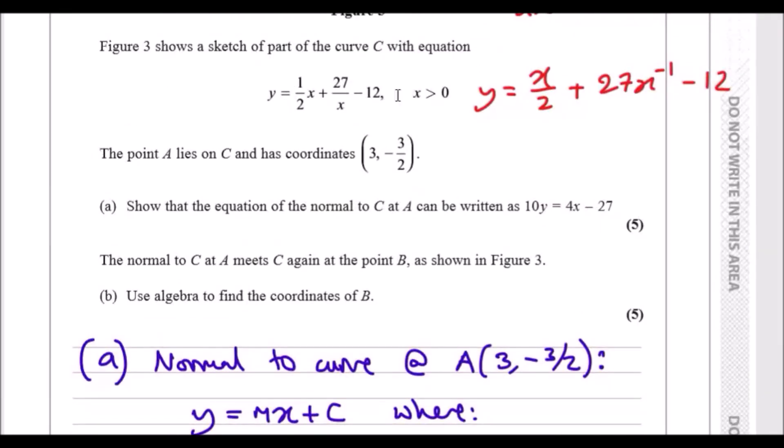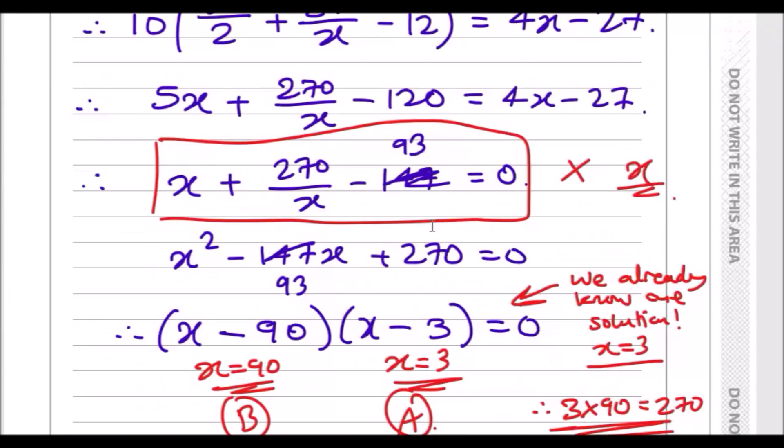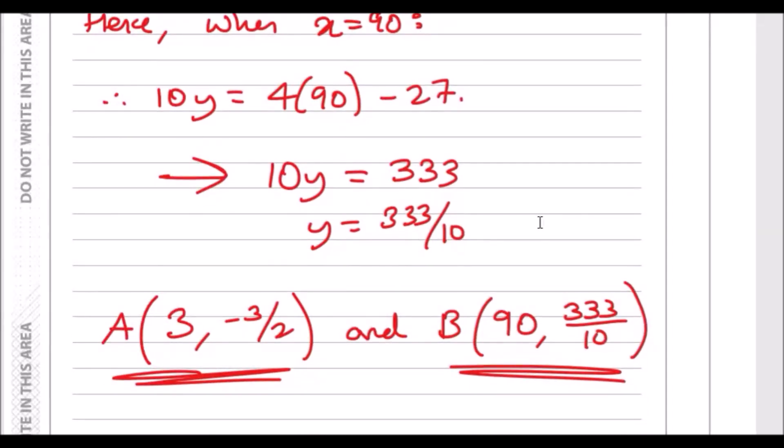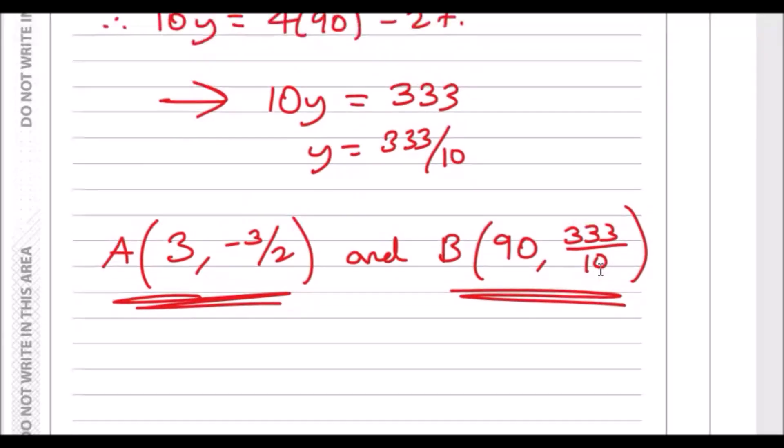With x equals 90, just plug into any of the two equations we started off with. I'm going to choose the line equation because I think it's easier to work with. When you do that, plug in x equals 90 here, all of this will sum up to 333 divide by 10. And that's it, you're done. You got your y pair.